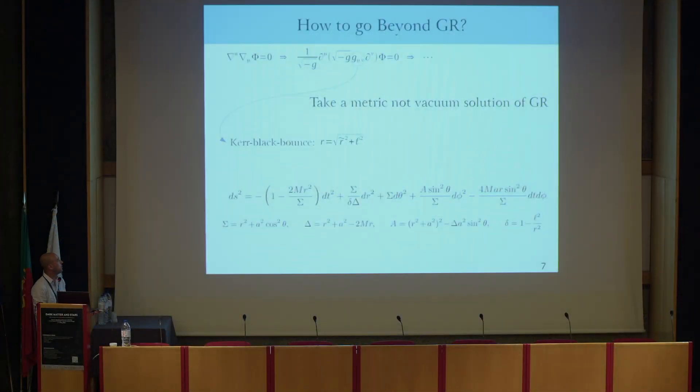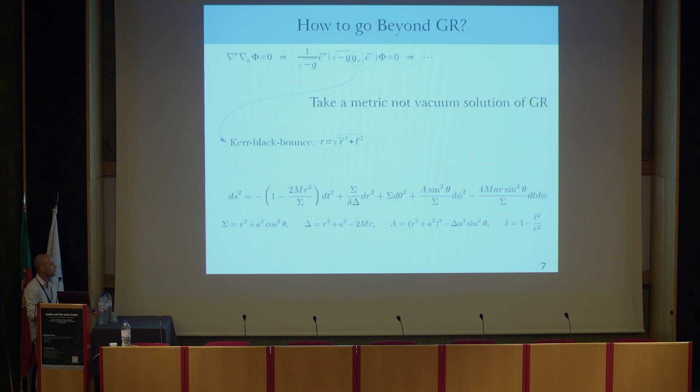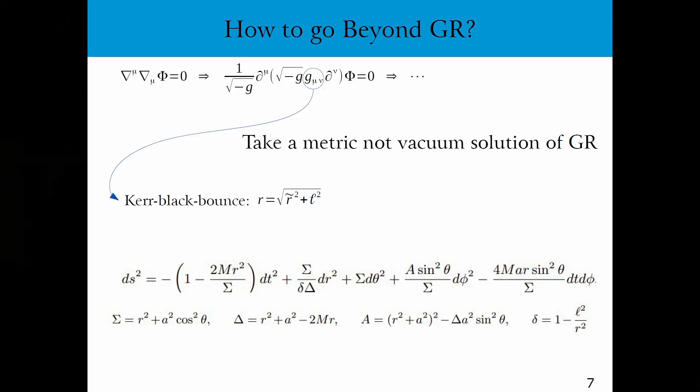How to go beyond GR? Here I propose a toy model in which I take into account the simplest quantum field equation in curved spacetime. Opening up the covariant derivative, you see that the metric is highly involved. So we take a metric which is not a vacuum solution of general relativity. We considered a Kerr-black bounce, which can describe a regular black hole or a wormhole depending on the value of a regularizing parameter, and try to plot differences in the evolution of this kind of black hole with respect to a Kerr solution.